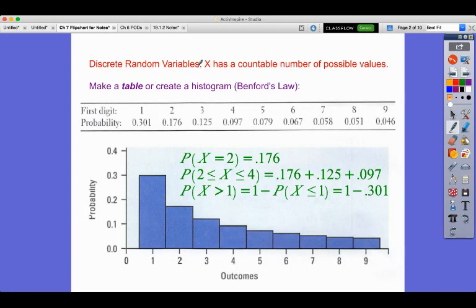Discrete random variable, X has a countable number of possible values. You make a table, create a histogram. We see Benford's law. Here's a table of values where I show all the probabilities. Here's a histogram of all the values. These bars, if we took their areas, would add up to one where the width is one and the height is 0.3 and the width is two and the height is like 0.176.